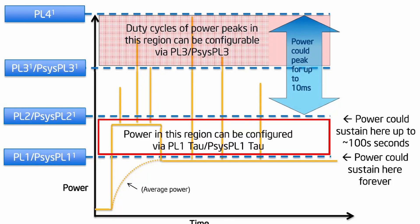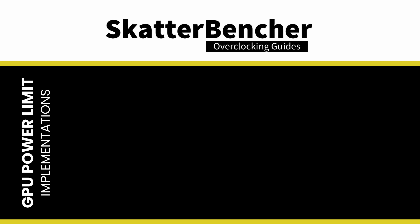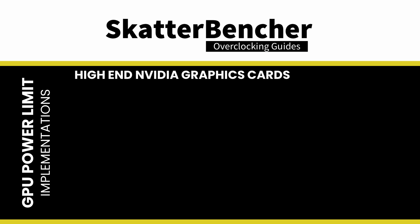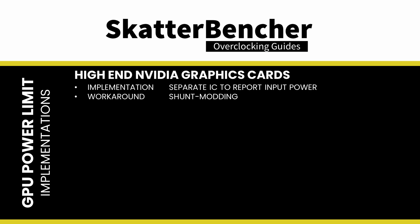I've tried many things to work around the PL4 limit but have yet to find a viable solution. We know quite a lot about Intel's power limits from the CPU side — PL4 is the ultimate safeguard against peak power spikes and can never be exceeded. What we don't know is how this PL4 limit is implemented on their discrete GPUs. One option: maybe the power limit is implemented like on high-end Nvidia graphics cards, where a separate IC reports the 12V input power by measuring the input voltage and voltage drop over a shunt resistor. In this case, we should be able to work around the power limitation by shunt modding.